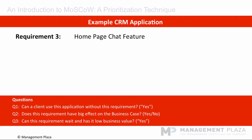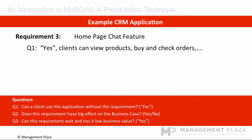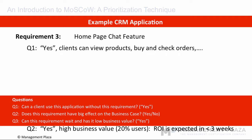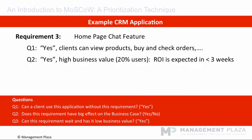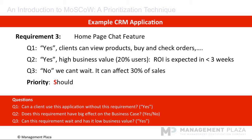The next requirement to prioritize is the homepage chat feature. First question: can the client use the application without this requirement? The answer is yes — clients can still view products, buy, and check. Second question: does this requirement have a big effect on the business case? The answer is yes — it has very high business value as 20% of users will expect to use it, and the return on investment is less than three weeks. Question three: can this requirement wait? We believe no, it cannot wait as it's going to affect about 30% of sales. So we should prioritize this as should have.